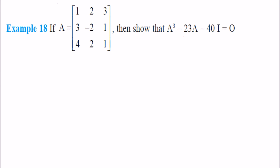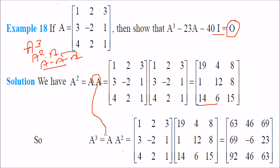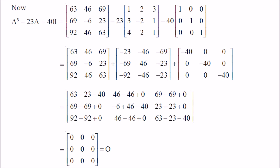If A is a given matrix, we verify that A³ − 23A − 43I = 0. We compute A² = A·A, then A³ = A²·A. Substituting into A³ − 23A − 43I, where I is the identity matrix, and adding them together, we get the zero matrix.